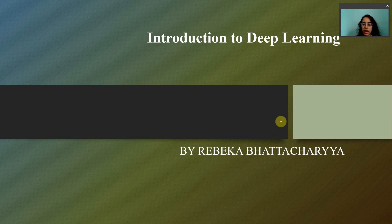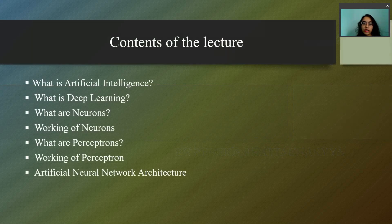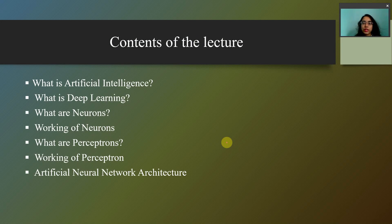In this lecture, I am going to tell you about what is artificial intelligence, because before understanding what deep learning is, you have to understand what is artificial intelligence. After the definition of artificial intelligence, I am going to start with the deep learning definition and fundamental terms — that is what are neurons, the working of neurons, what are perceptrons, the working of perceptrons, and finally the architecture of the artificial neural network. For this video I will be telling you only the architecture. In my next lecture, I will be telling you about the working of this neural network.